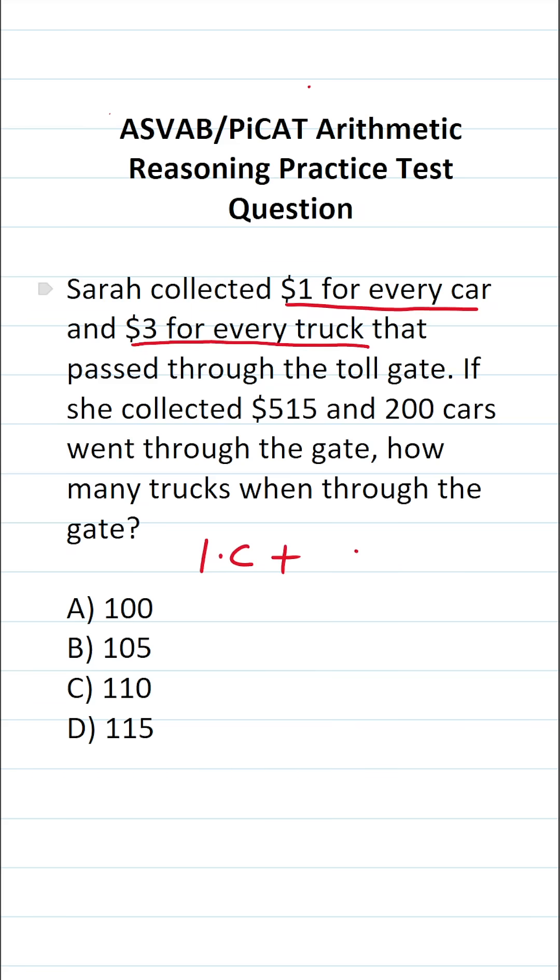Plus $3 for every truck that passed through the toll gate. That's going to be three times the number of trucks that went through the gate. I'm going to use the letter variable T to represent the number of trucks. Equals the total amount she collected in tolls, which we know is $515. Let's clean this up a little bit. 1 times C is just C. 3 times T is 3T equals 515.